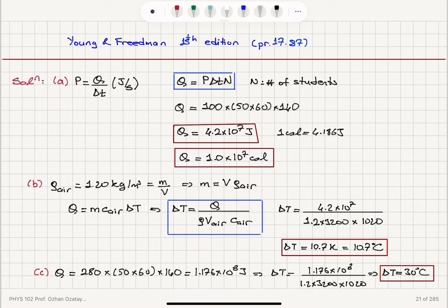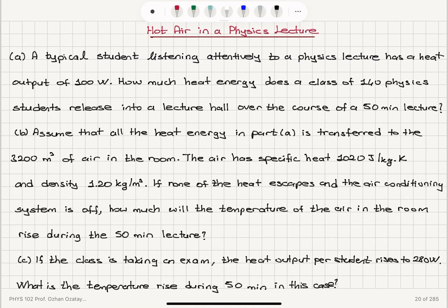You will notice that if the air conditioner is off, a classroom with the same number of students will have a substantially higher temperature rise during an exam. We talked about hot air in a physics lecture knowing that a student listening carefully to a physics lecture has a heat output of 100 watts with total number of physics students 140 in a lecture hall where the course takes 50 minutes.